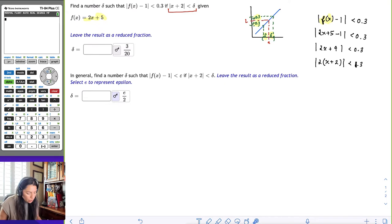So now I can go ahead. The absolute value of a product is the product of the absolute values. So I would have |2| times |x + 2| less than 0.3. Well, the absolute value of 2 we know is 2. So we'll have 2|x + 2| less than 0.3.